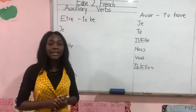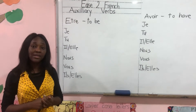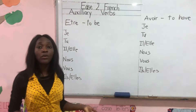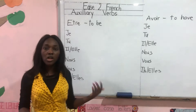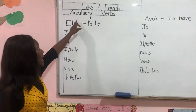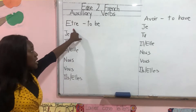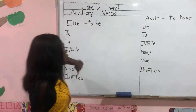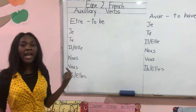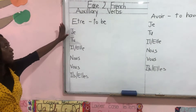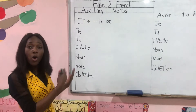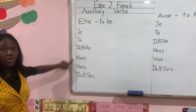In our last class we learnt the personal pronouns in French, and I said you need to know that to learn how to conjugate. Today we are looking at the auxiliary verbs to be and to have. To be in French is être. Before you use the verb you must conjugate it, making the verb agree with the noun or the pronoun, and so we have our pronouns here.